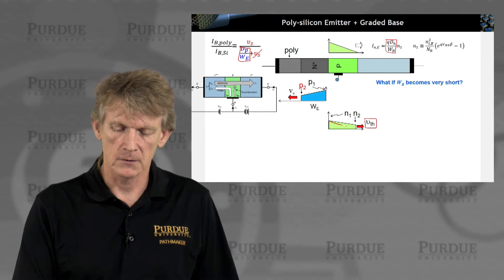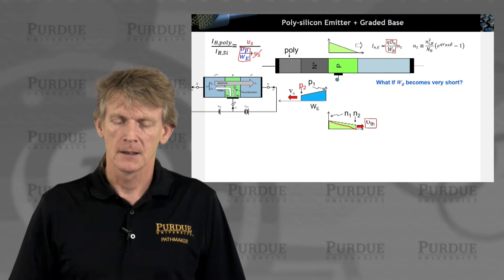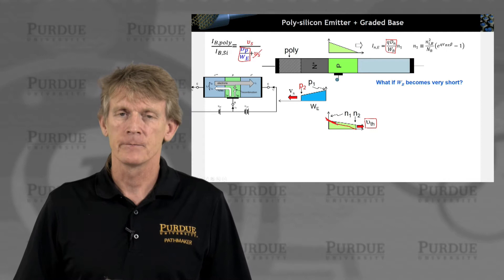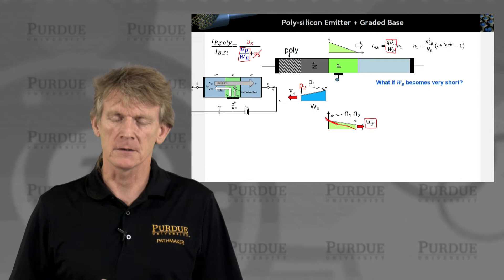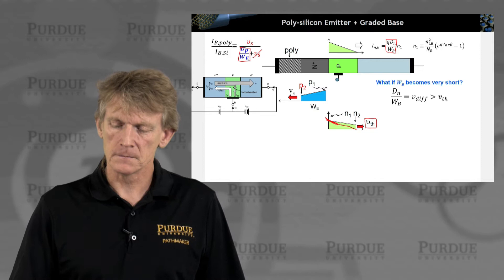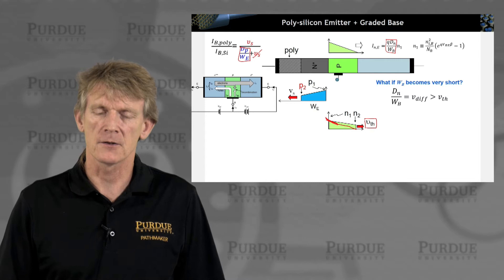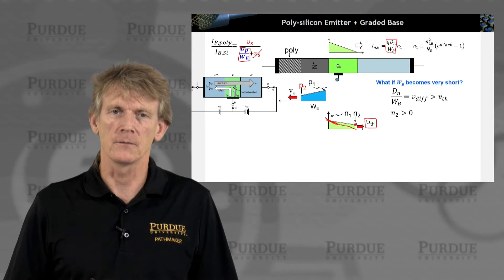So what if that velocity becomes comparable to this thermal velocity that can be sustained? What if this velocity becomes so large that it can't really drop to zero, given the boundary condition? Meaning the velocity or the current that you would require to drive it would be too high. Therefore, you dominate it by the thermal velocity in the base. So you can't drive that much current with this short base. So that means the diffusion velocity would become too large, it would become larger than the thermal velocity, and this N2 value becomes larger than zero.